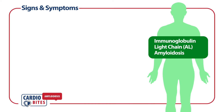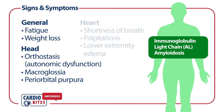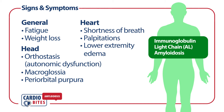The signs and symptoms of AL amyloidosis include fatigue, weight loss, orthostasis and lightheadedness with standing due to autonomic dysfunction, macroglossia, periorbital purpura, shortness of breath, palpitations, and lower extremity edema.